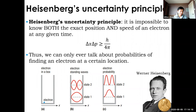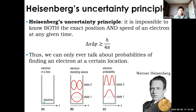An electron doesn't have to be in state one — it can have two peaks instead. In state two, the probability curve shows two high-probability regions and zero probability in the middle, which is again a node. Instead of a specific location, you have probabilities of finding electrons — you can't be certain where an electron is.